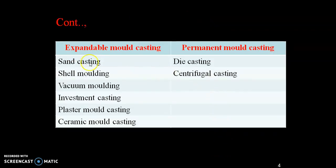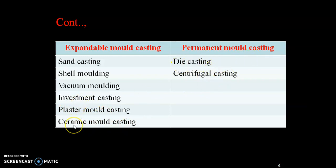Expandable mould casting types include sand casting, shell moulding, vacuum moulding, investment casting, plaster mould casting, and ceramic mould casting. Permanent mould casting types include die casting and centrifugal casting.